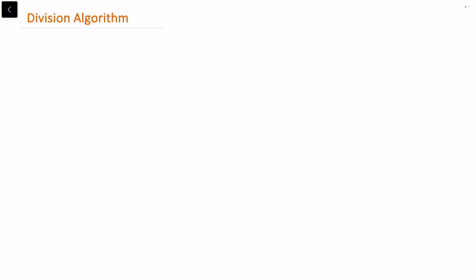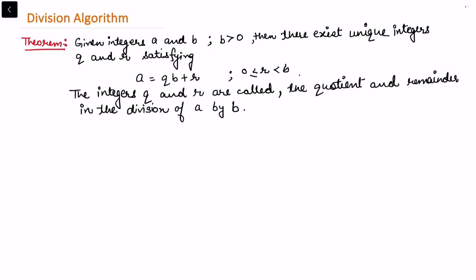In this video I will be talking about the division algorithm. The statement of the theorem says: given two integers a and b, with b strictly greater than zero, there exist unique integers q and r — called the quotient and remainder — satisfying a = qb + r, where 0 ≤ r < b. We assume b is strictly positive for now, and will address the case where b is not positive as a corollary.